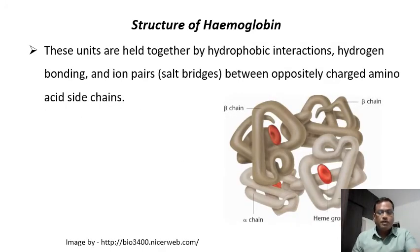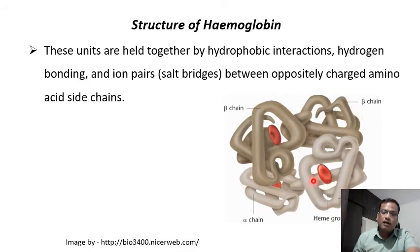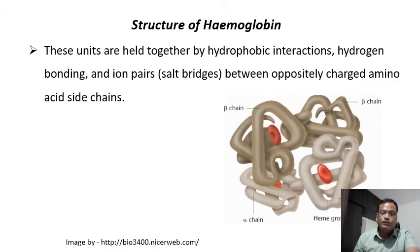This diagram shows the structure of hemoglobin — a quaternary structure resulting from four polypeptides. These two represent the two beta chains, each 146 amino acids long, and these two are the alpha chains. The hemoglobin molecule is made up of four polypeptide chains — two alpha and two beta subunits — and here you can see the heme group. The function of hemoglobin is mainly the transportation of oxygen.